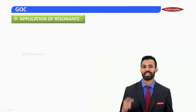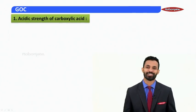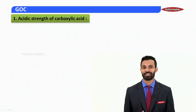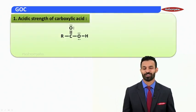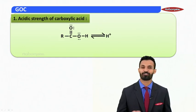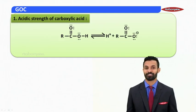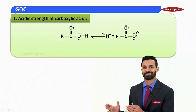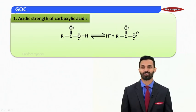The application of resonance basically helps us understand stability in compounds. Here we are going to learn the acidic strength of carboxylic acid. Any compound is an acid if its conjugate base is stable. Looking at the structure of carboxylic acid, when it donates a proton it forms a conjugate base called the carboxylate ion. We now have two structures — carboxylic acid and carboxylate ion — and we will draw the resonating structures of both.